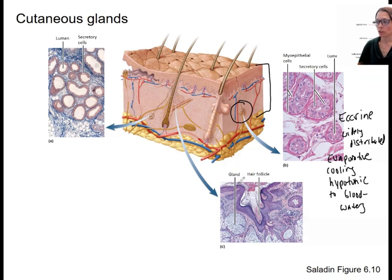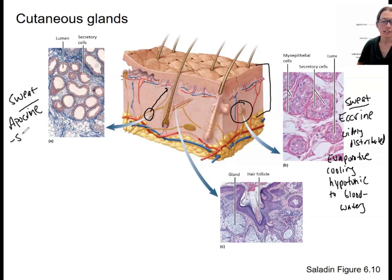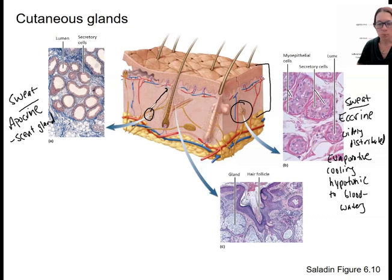Then we've got the other type — this is another type of sweat gland — but this is the one that releases onto a hair follicle. These are called apocrine. They are thought to function as scent glands. They produce a more oily, viscous stuff. They're located more in the pubic, axillary, and facial hair regions, and they open onto ducts right onto the hair follicles.